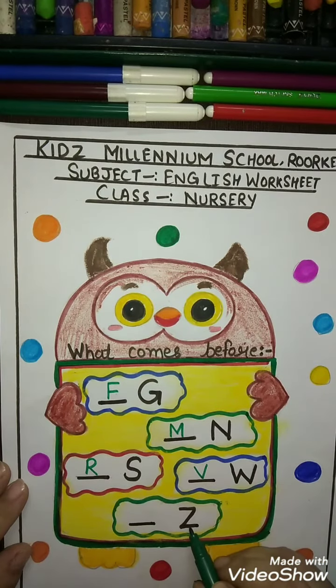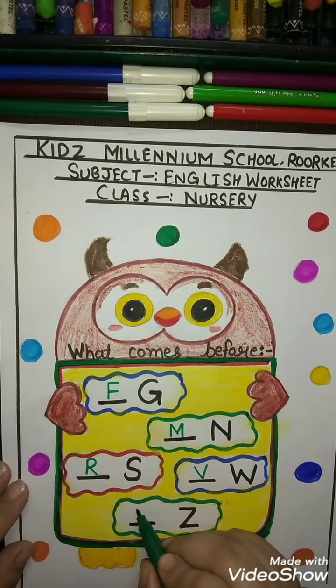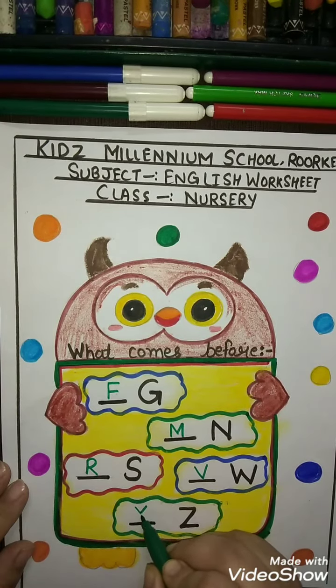Now Z for zip. So what comes before Z? Y. Y for yach. So you will write Y like this.